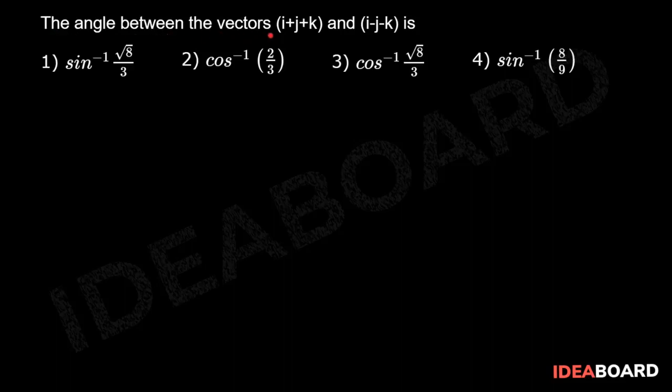The angle between the vectors i plus j plus k and i minus j minus k is, so generally the dot product between the two vectors a bar dot b bar which is equal to a b cos theta and from that